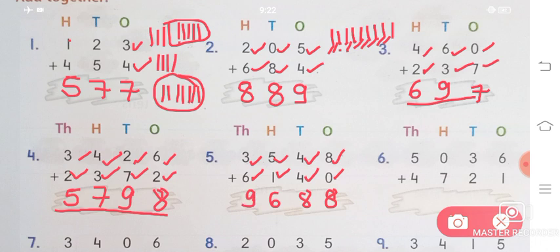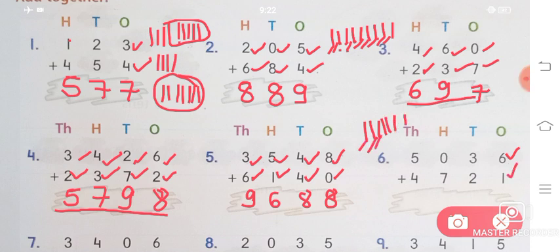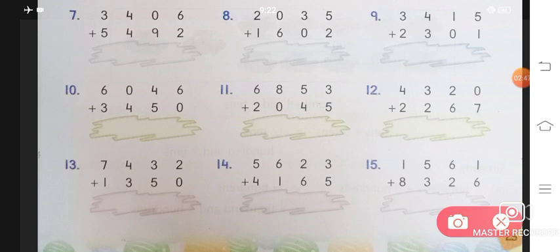Again, I repeat how to do it: draw lines for each number. For example, if we have 6, draw 6 lines; then add 1, so draw 1 more line. Count them: 1,2,3,4,5,6,7 — that is 7. Then 3 plus 2 is 5, 0 plus 7 is 7, and 5 plus 4 will give you 9. Answer is 9, 7, 5, 7.